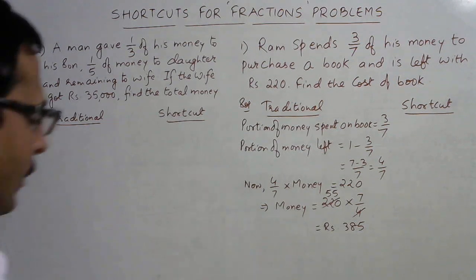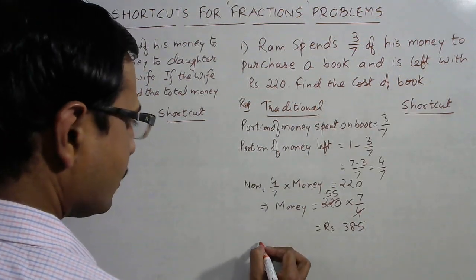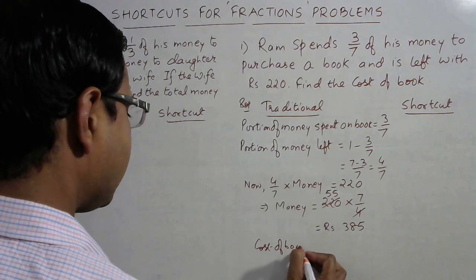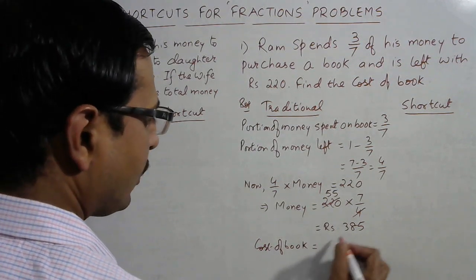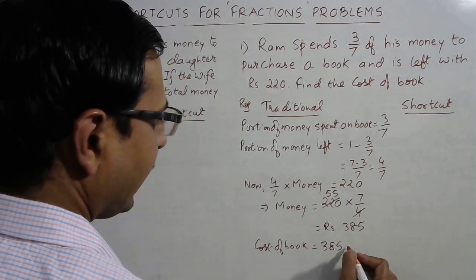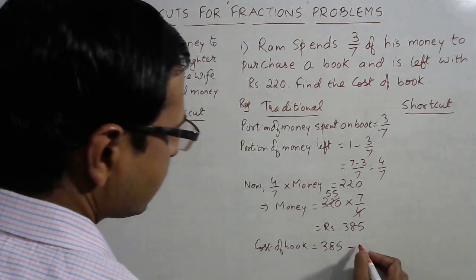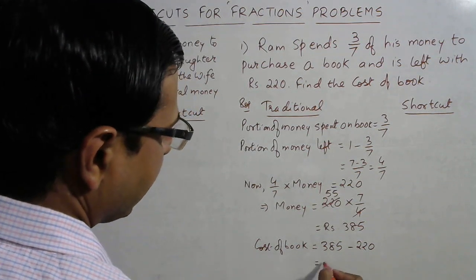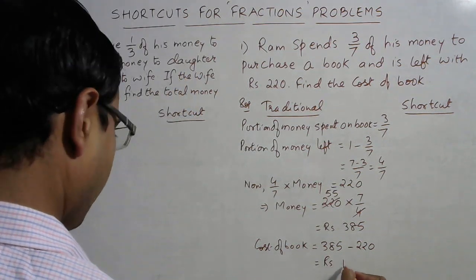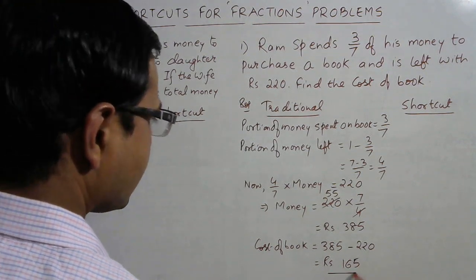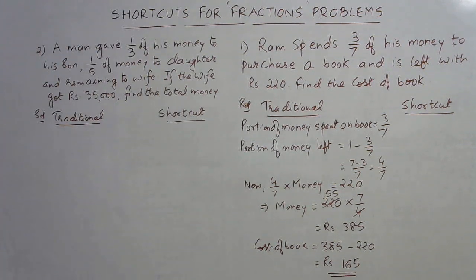Now, what is the cost of the book? Total money is ₹385 and the amount left with him is ₹220. So just subtract: cost of book = 385 − 220 = ₹165. This is the traditional approach of solving this question.